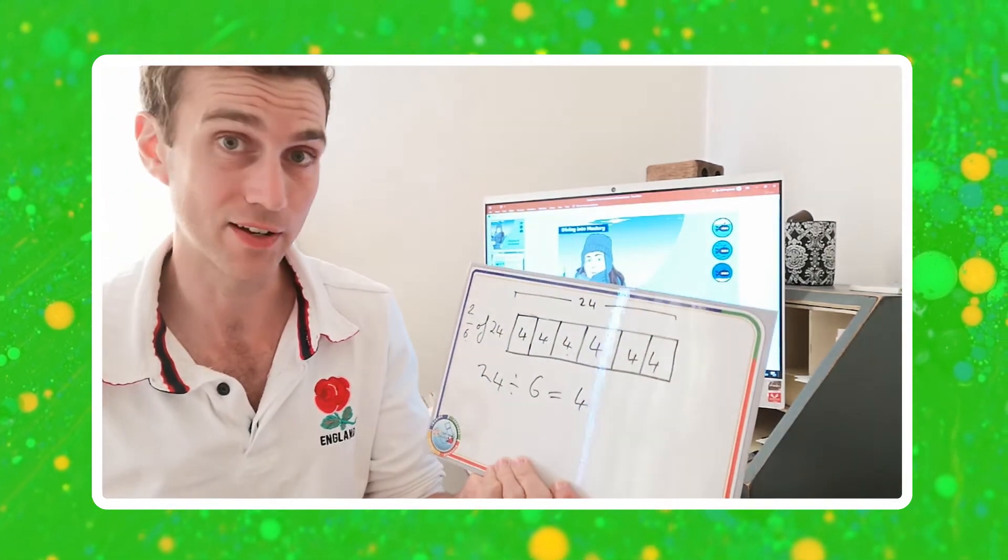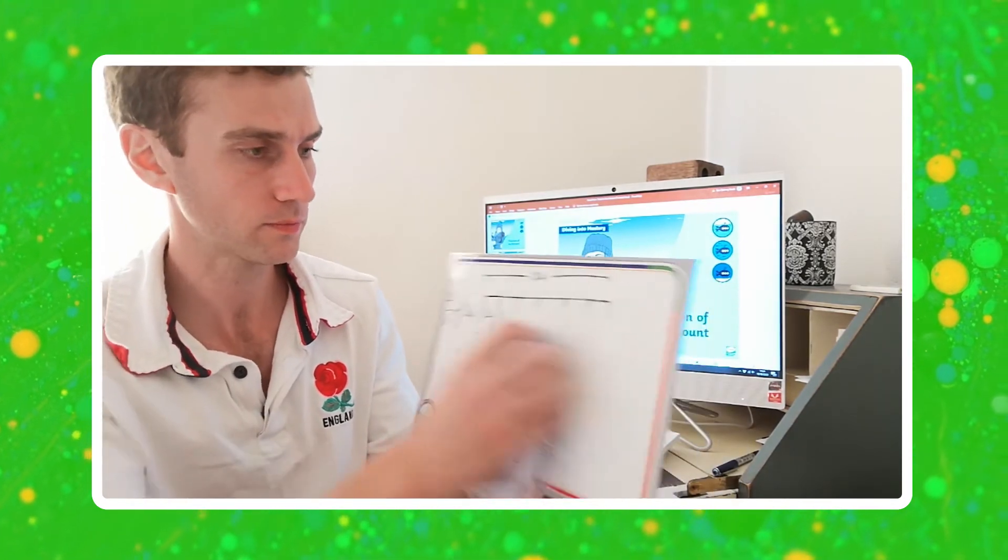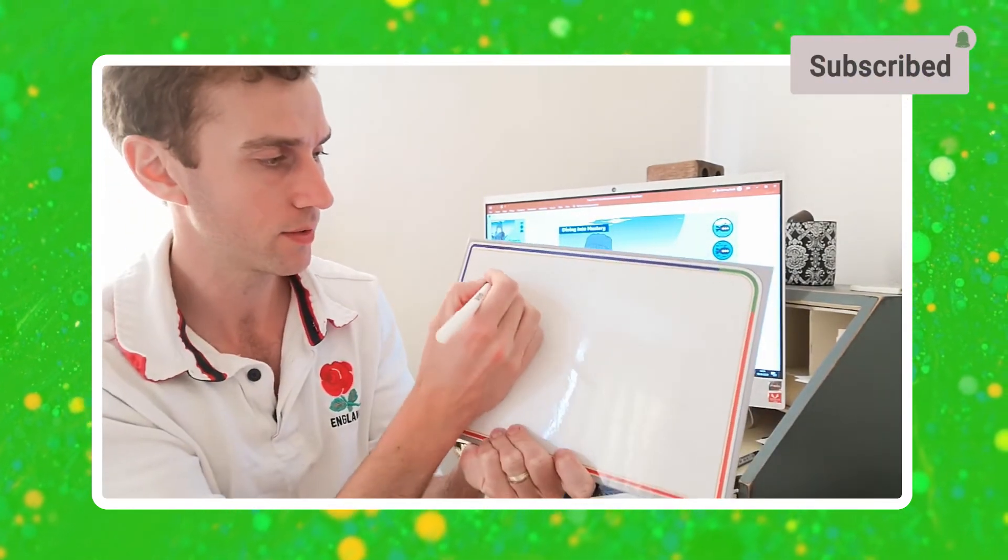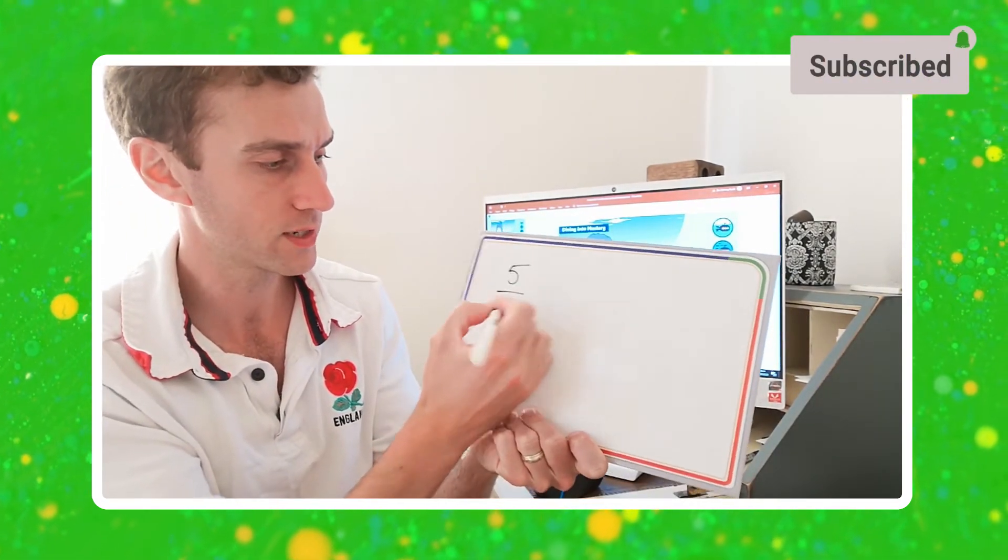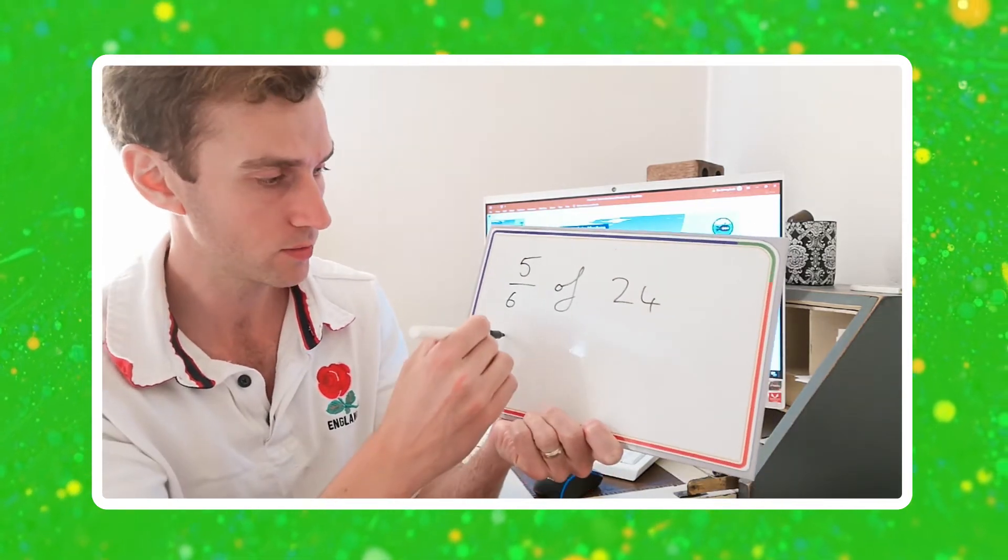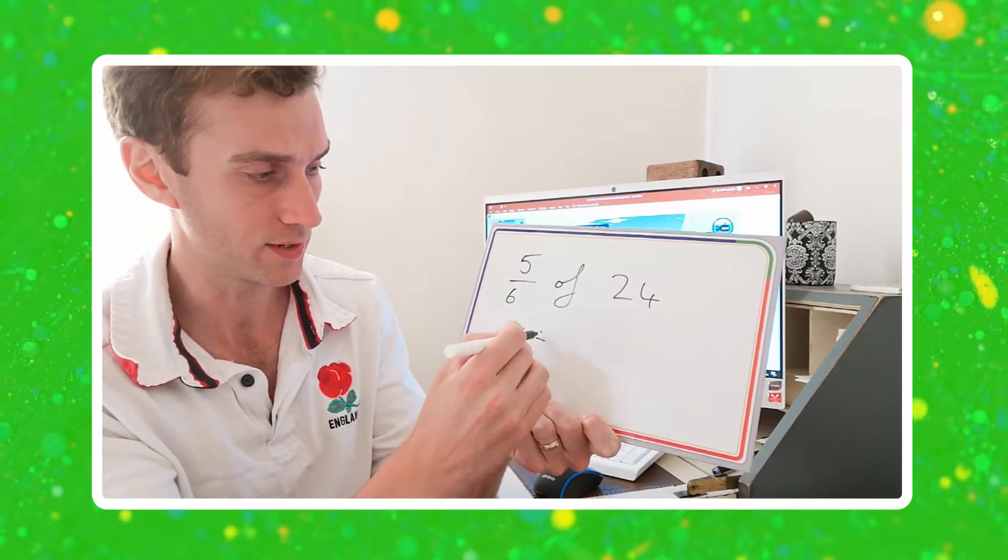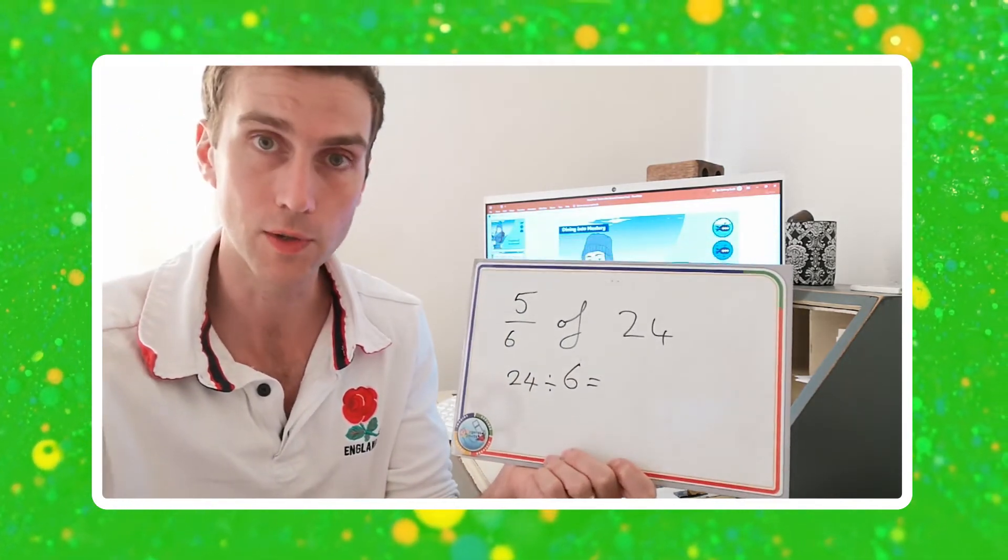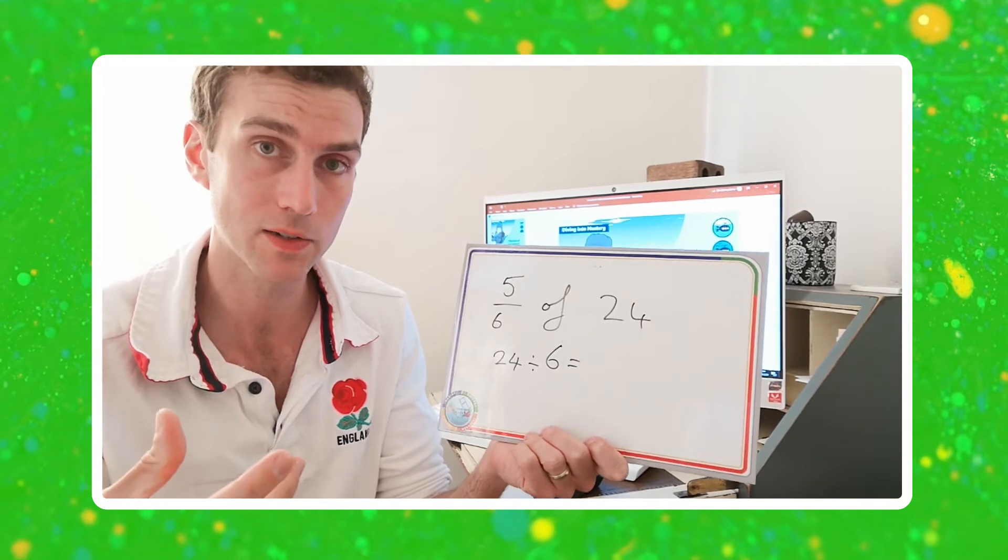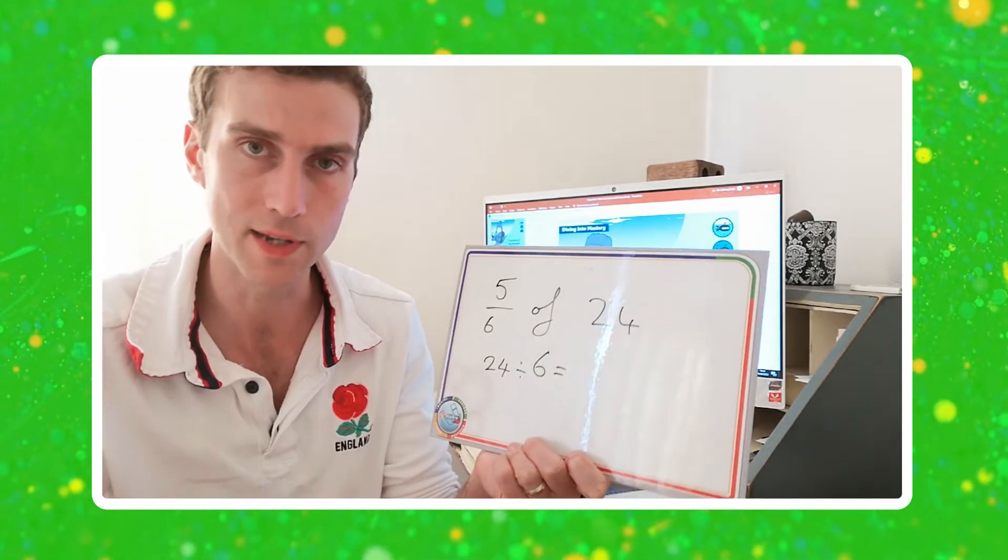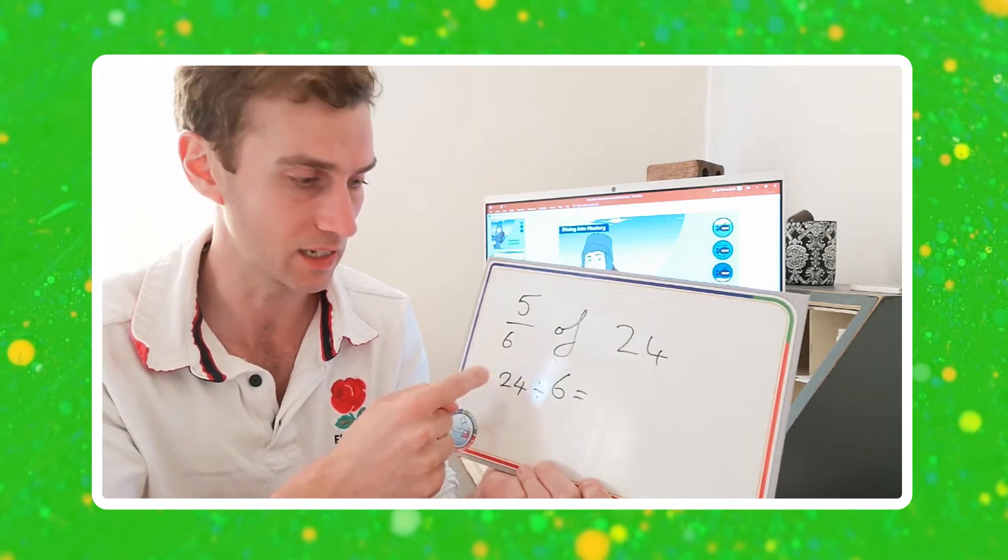If I didn't even have a bar model, I could still work it out by just using a written method. So let's go with 5 sixths of 24. Well, I have to do 24, and I have to divide it by 6. Now, you can either use, of course, your division number facts to do that. Oh, 24 divided by 6 is 4. Or flip it, do the inverse, count up in sixes until you get to 24.